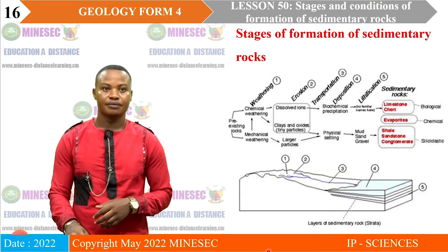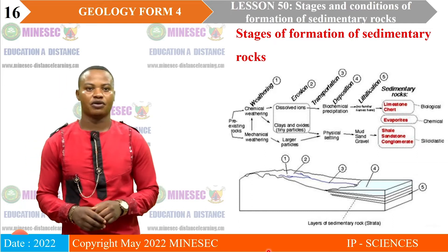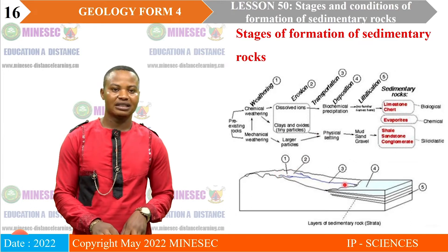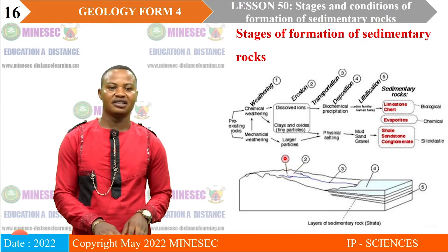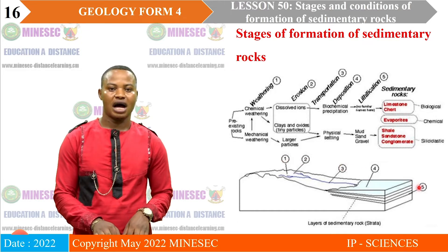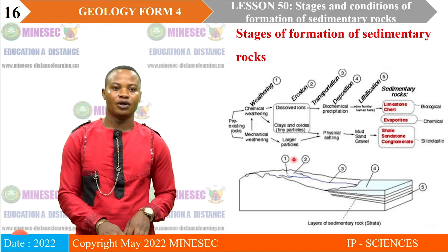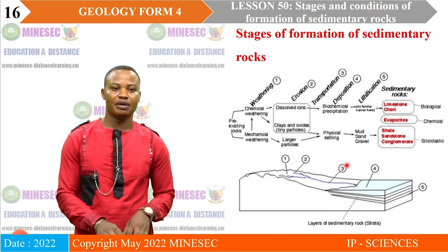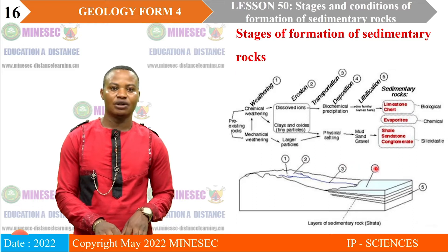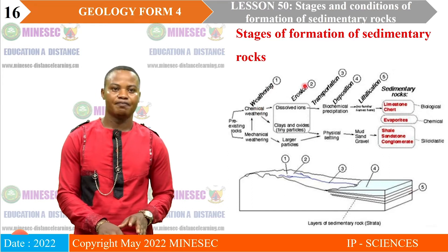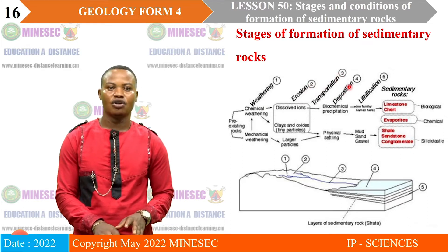We begin with the stages of formation of sedimentary rocks. Observe this diagram showing a slope entering into the sea, with five numbered activities at different positions. Number one is at the top of a slope — weathering. Number two, getting to the middle — erosion. Number three, at the base of the slope — transportation. Number four, inside the ocean — deposition. Number five, below the ocean — lithification. This diagram summarizes the stages of formation of sedimentary rocks.